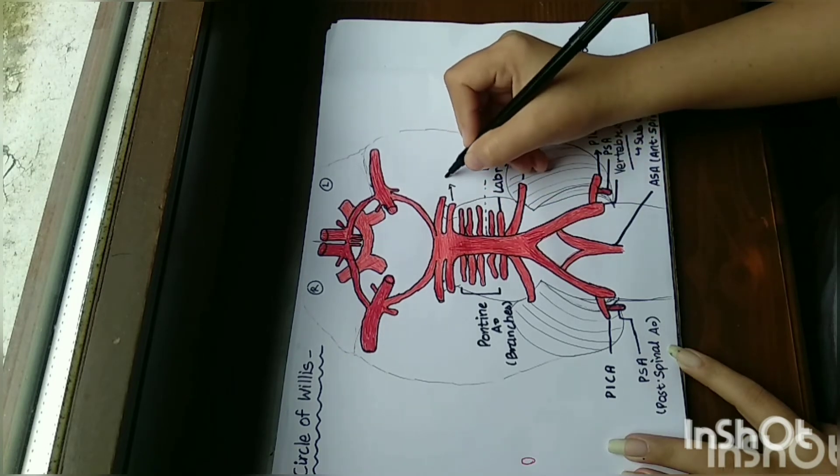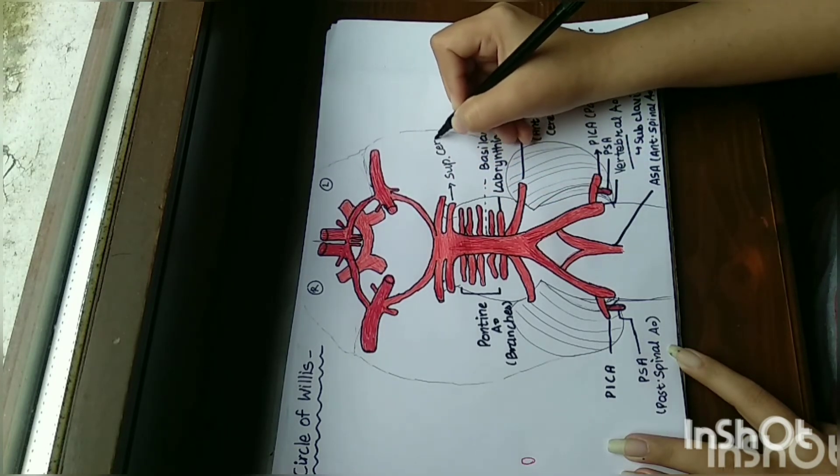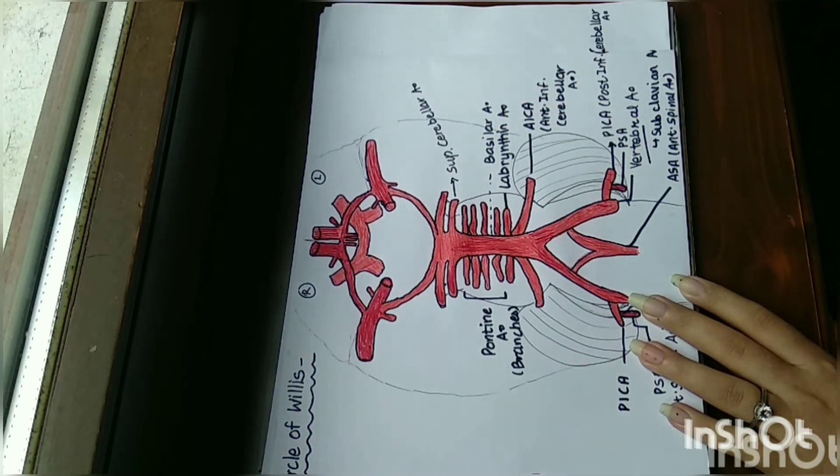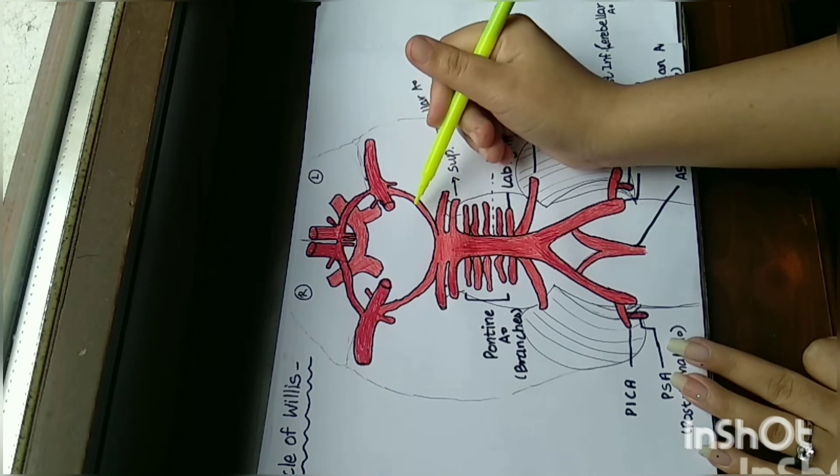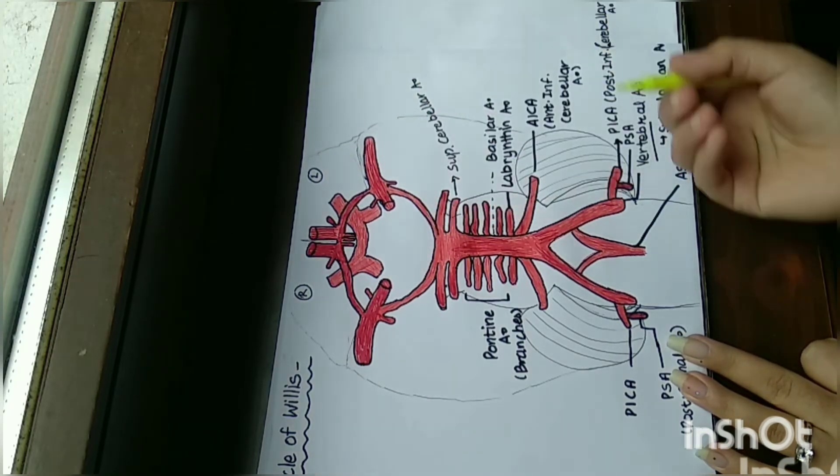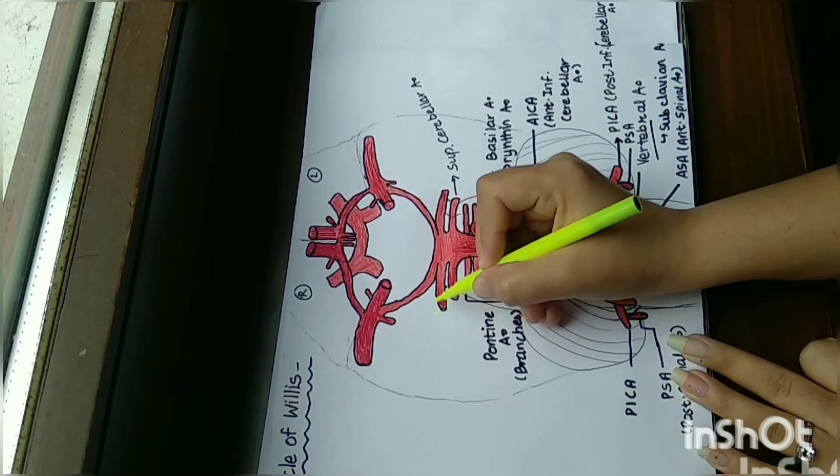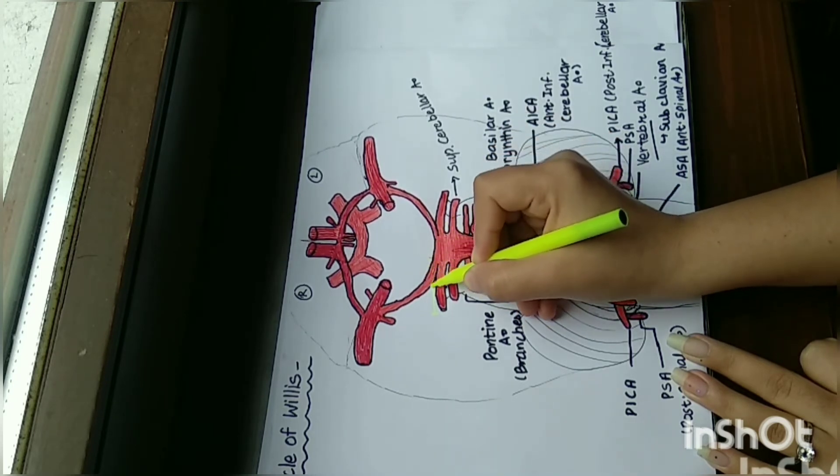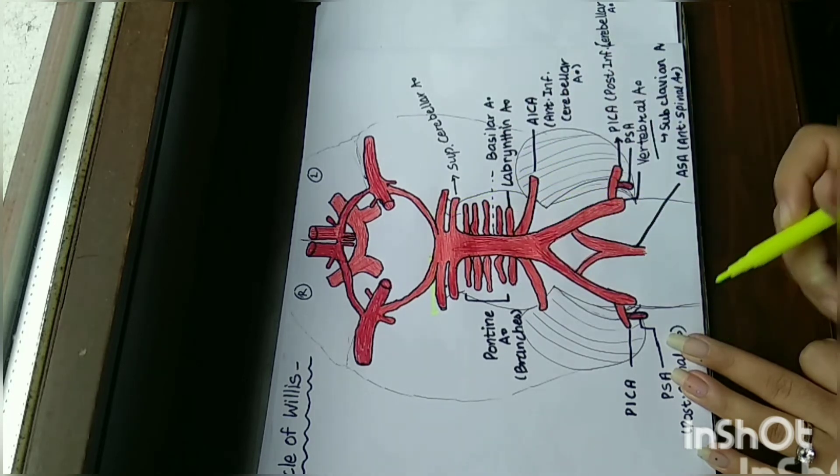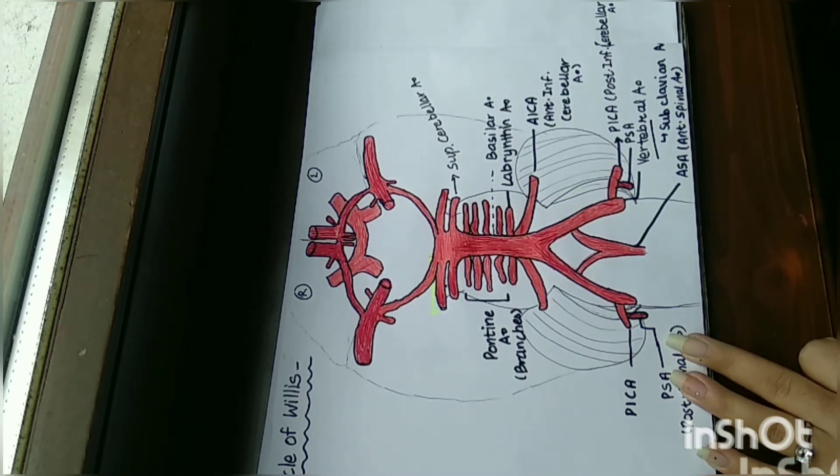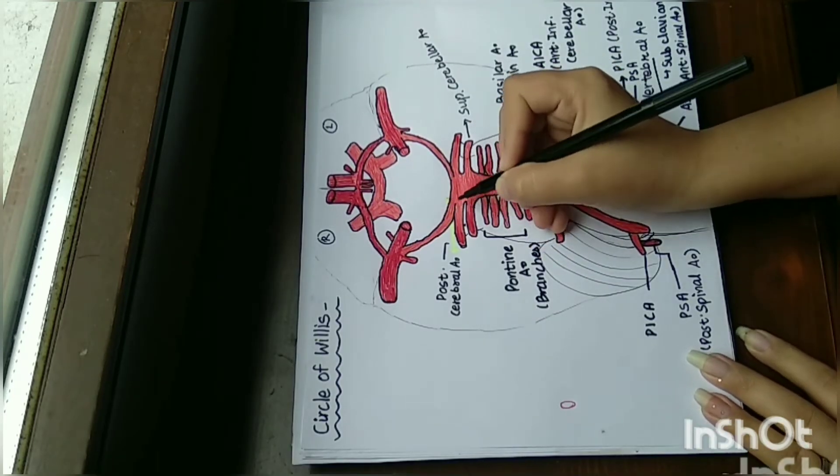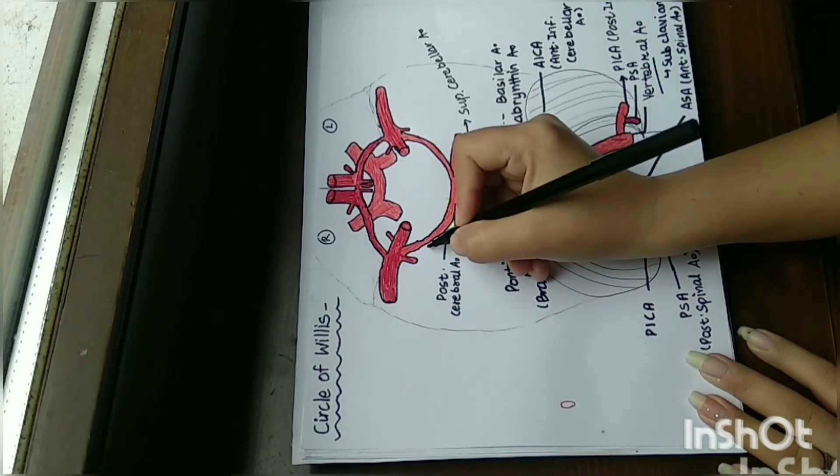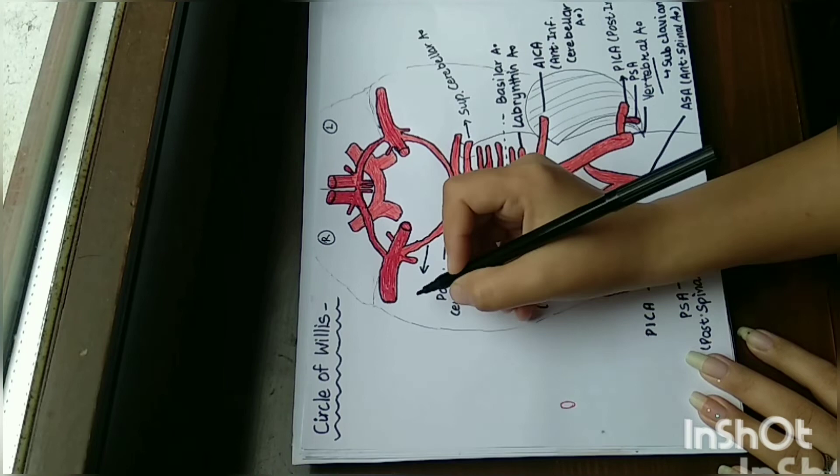This is known as the superior cerebellar artery. Then this forms the Circle of Willis. From this part to this part, it forms the posterior cerebral artery, and it communicates with the middle cerebral artery. This is known as the posterior communicating artery.